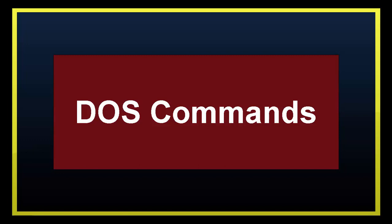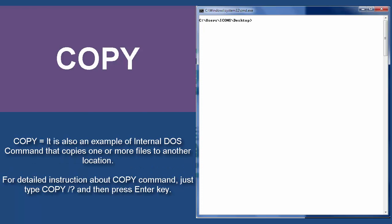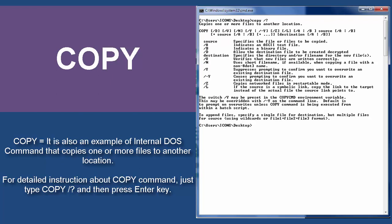Let us enumerate some examples of DOS commands. CLS — it is an example of an internal DOS command used to clear the screen. To know more about the CLS command, simply type CLS space slash question mark and then hit enter. Copy — it is an example of an internal DOS command that copies one or more files to another location. For detailed instruction about the copy command, just type copy space slash question mark and then press enter.